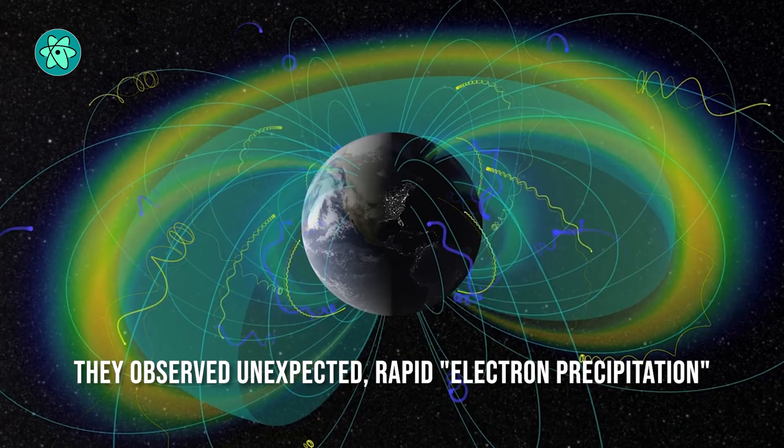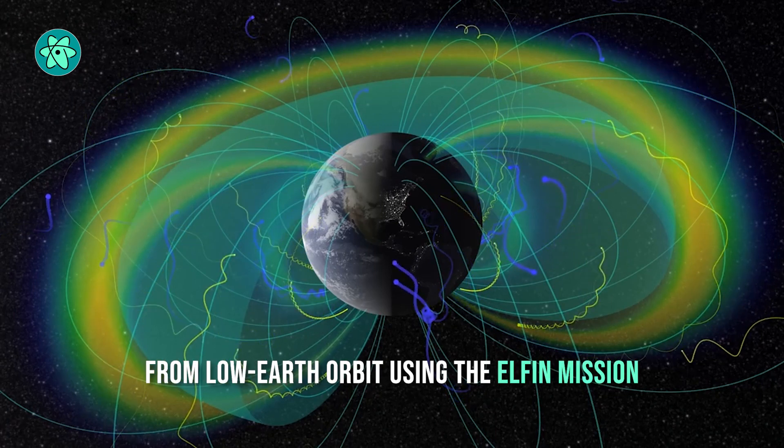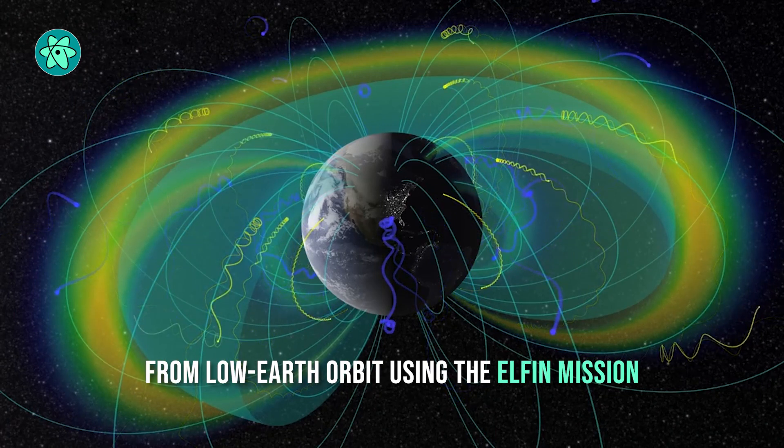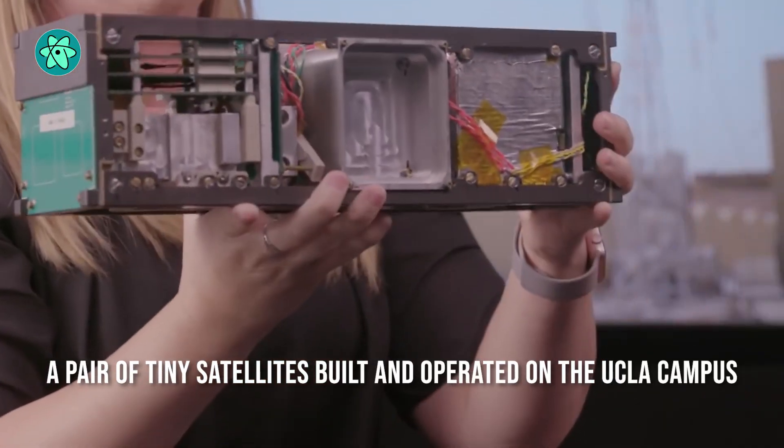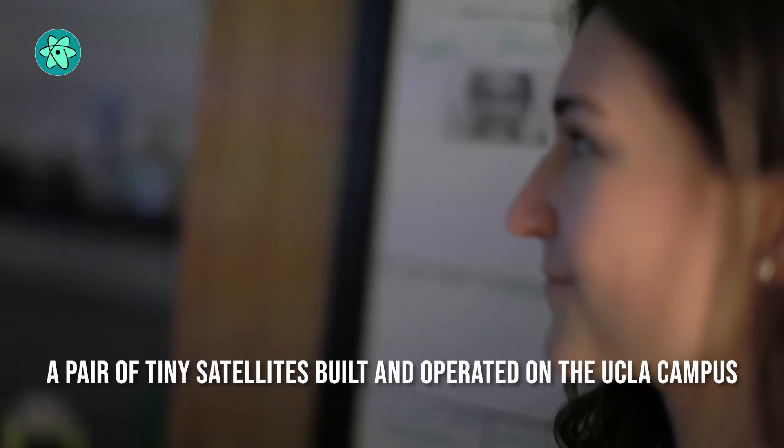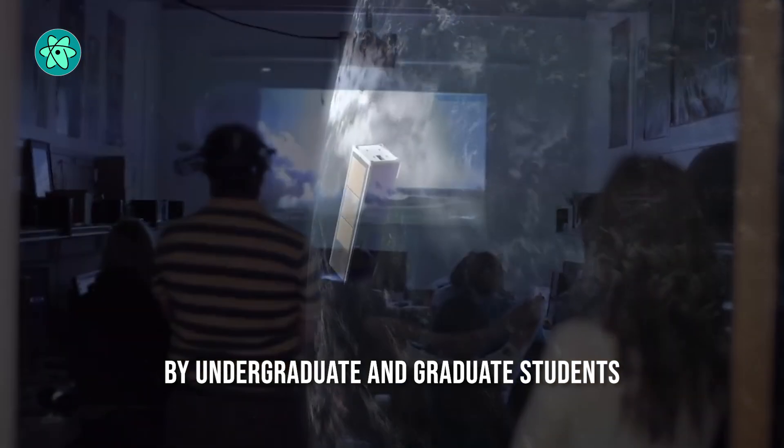The researchers observed unexpected rapid electron precipitation from low-Earth orbit using the ELFIN mission, a pair of tiny satellites built and operated on the UCLA campus by undergraduate and graduate students.